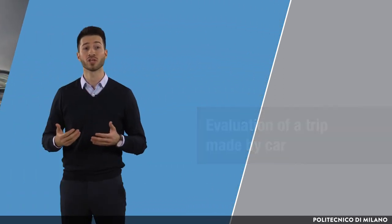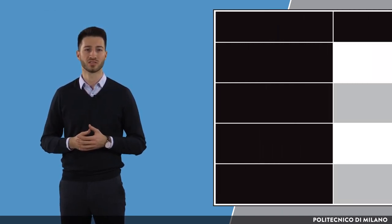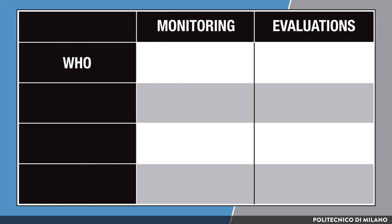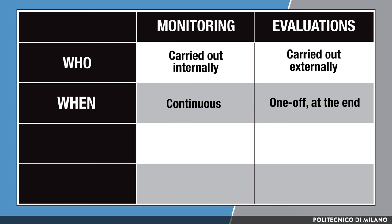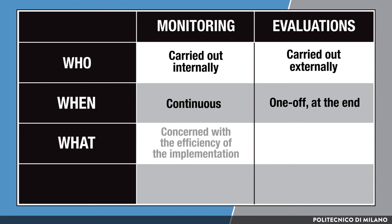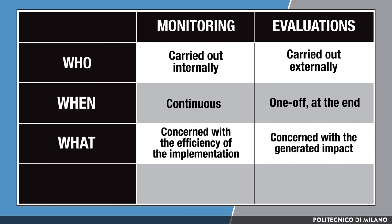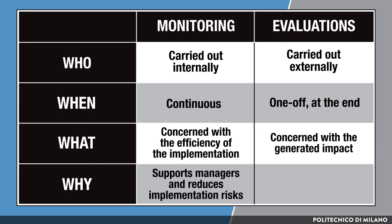While monitoring and evaluation usually go hand in hand, there are a number of important dissimilarities. First, there is a difference in who carries out the activity: monitoring is done internally, typically by the policy program managers, while evaluation is typically done externally by independent agents. Second, there is a difference in timing: monitoring is done continuously during the whole period of implementation, while evaluation is performed after the policy program, typically at the very end of the implementation process. Third, there is a difference in what is being done: monitoring focuses on observing the ongoing implementation, while evaluation is concerned with the analysis of outcomes and impact generated by the implemented policy. Finally, there is a difference in why the two activities are carried out: monitoring is conducted to support management of the policy program and reduce risks of not reaching preset objectives, while evaluations are intended to assess the overall value of the policy program.